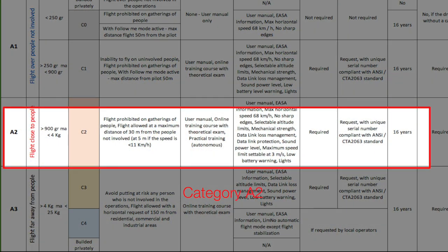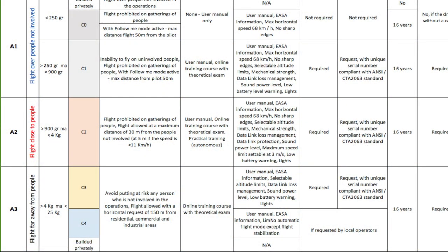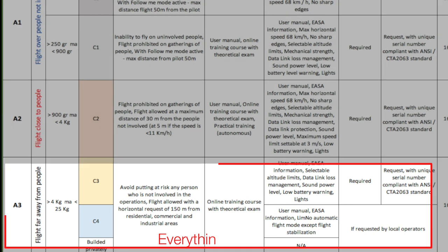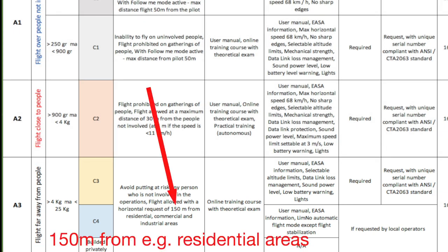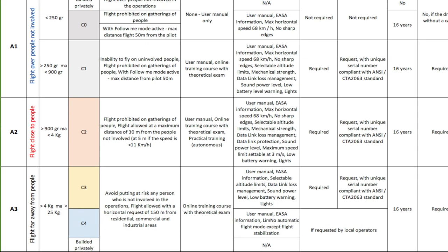A2 is something we will not discuss here because you need to have a separate examination and study, and you have to do that at the office of your authorities — not online. Training yes, the examination no. Then we have A3, the heavy drone like my Inspire 2. The big difference is that drone requires 150 meters distance from a building area, a residential area, an industrial or recreational area.